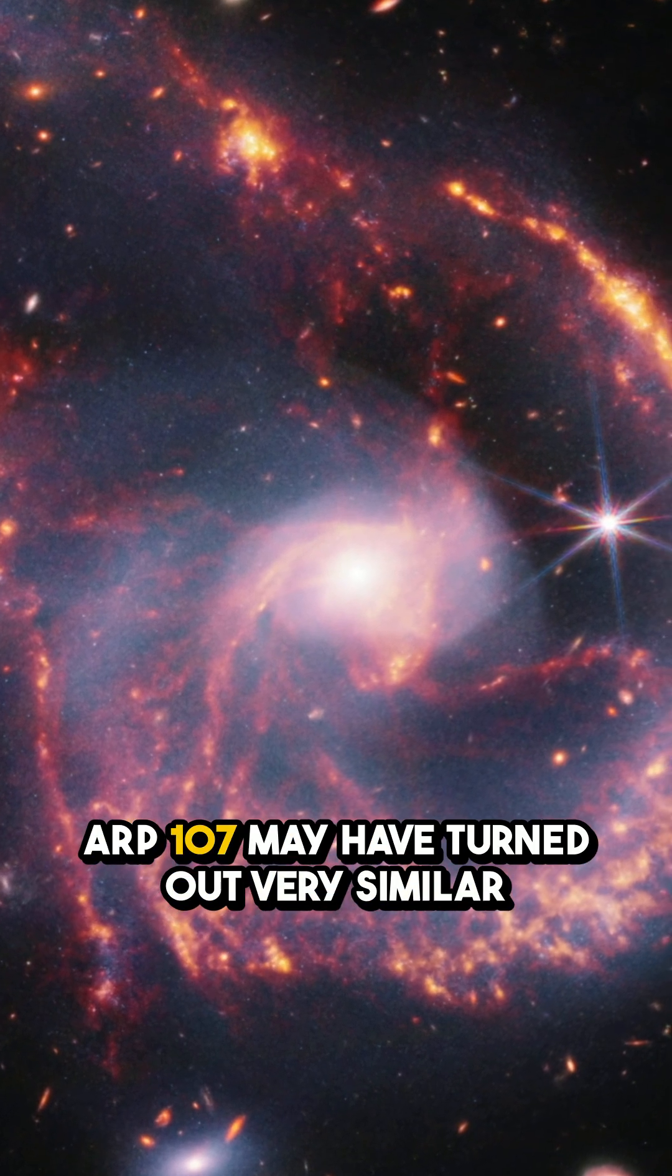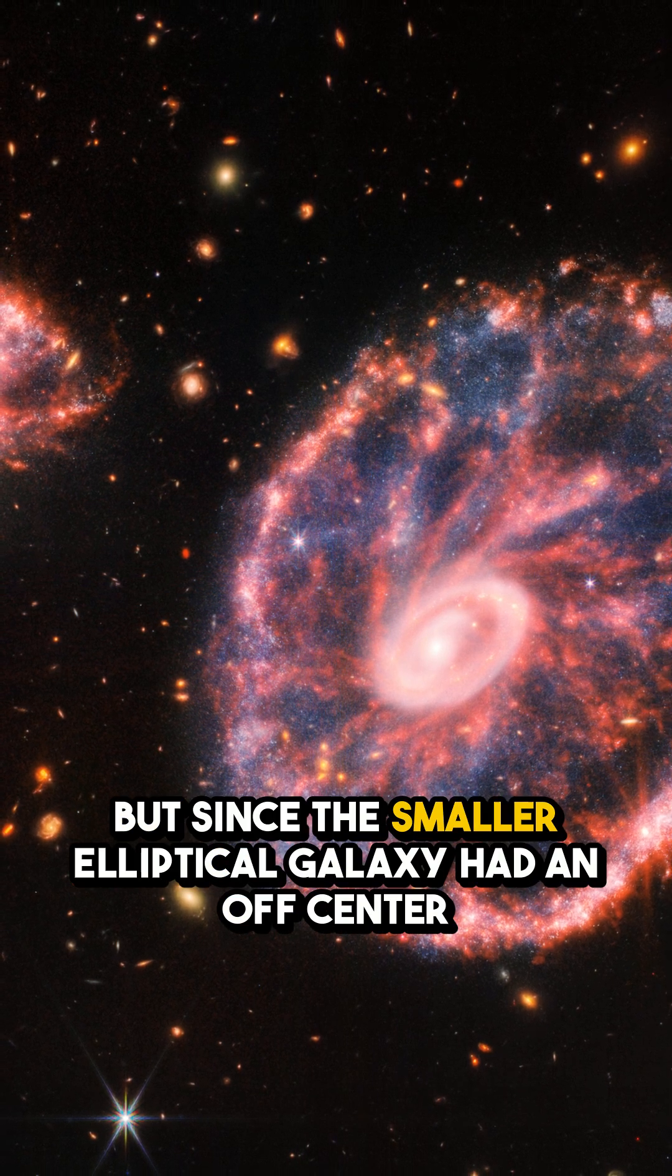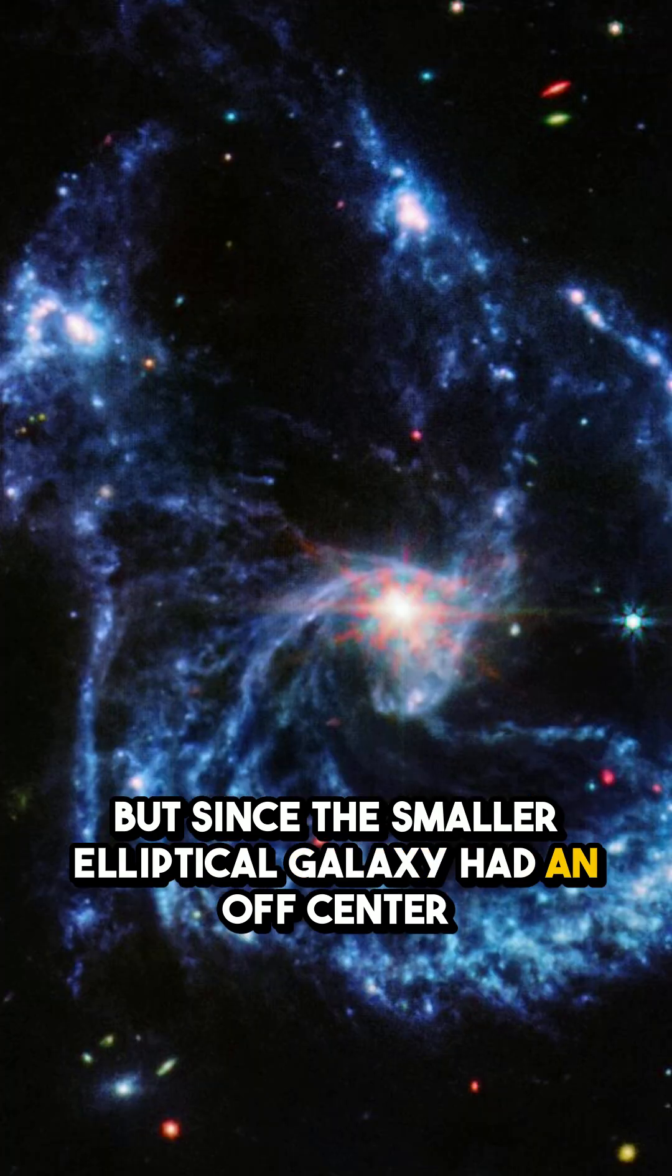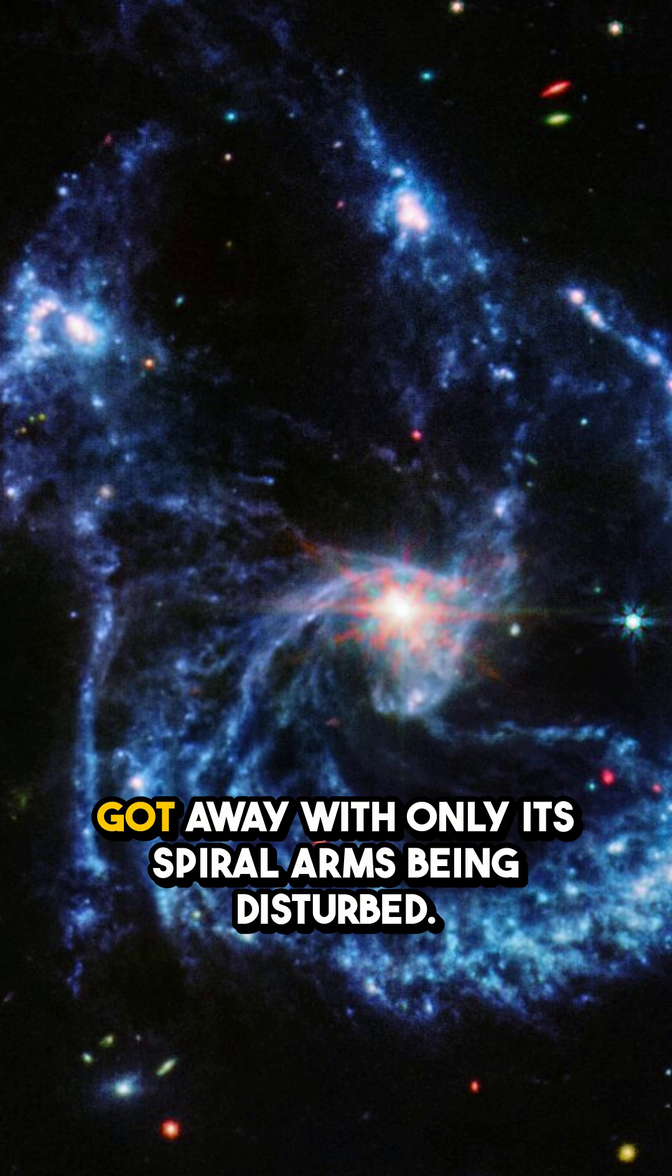ARP-107 may have turned out very similar in appearance to the Cartwheel, but since the smaller elliptical galaxy had an off-center collision instead of a direct hit, the spiral galaxy got away with only its spiral arms being disturbed.